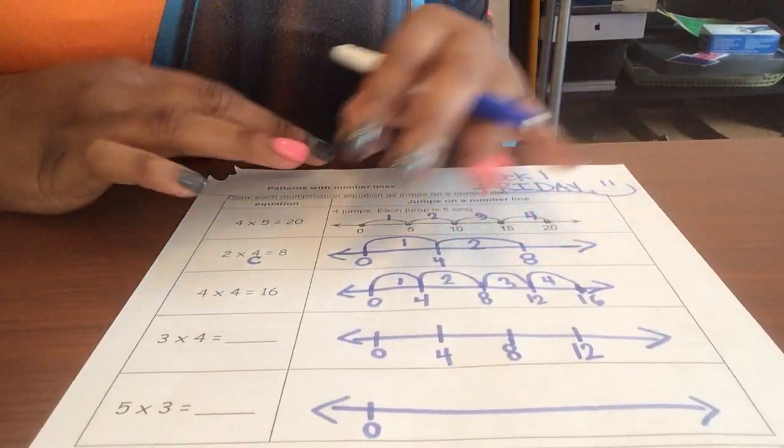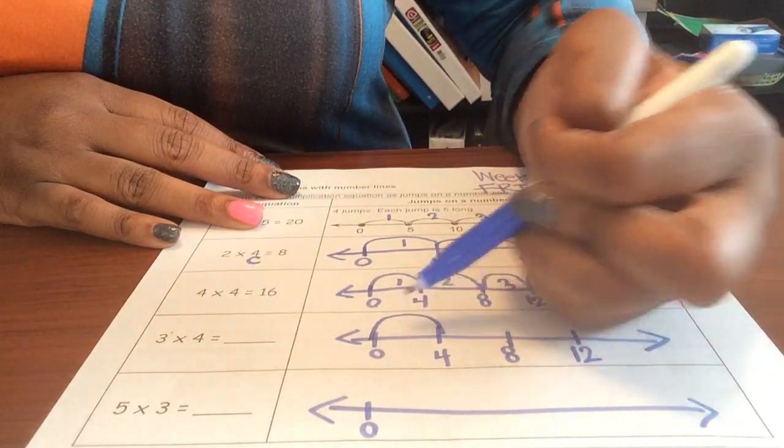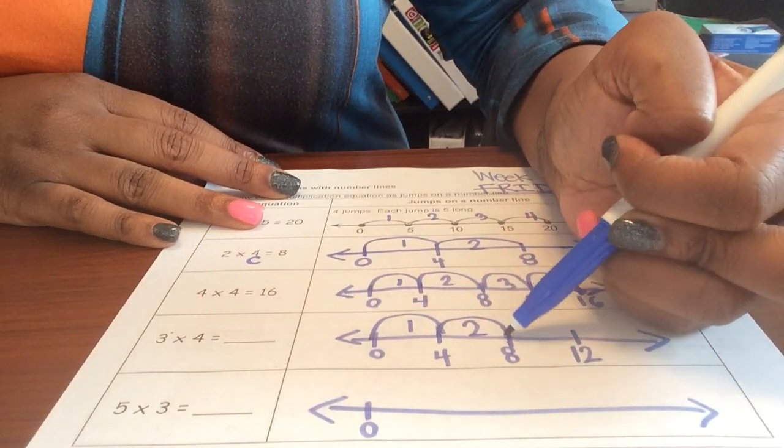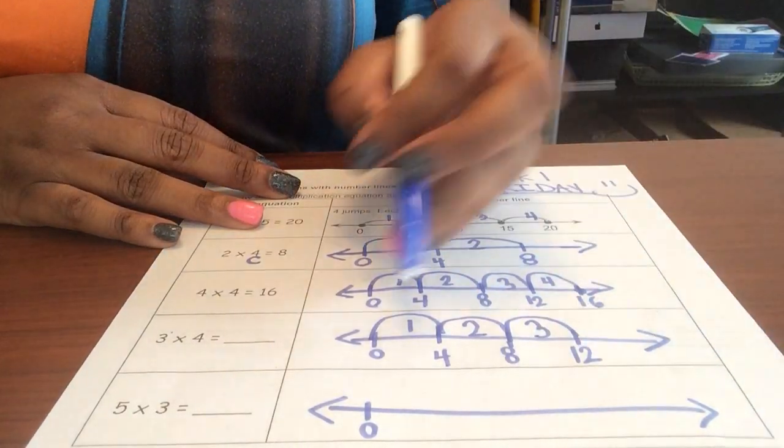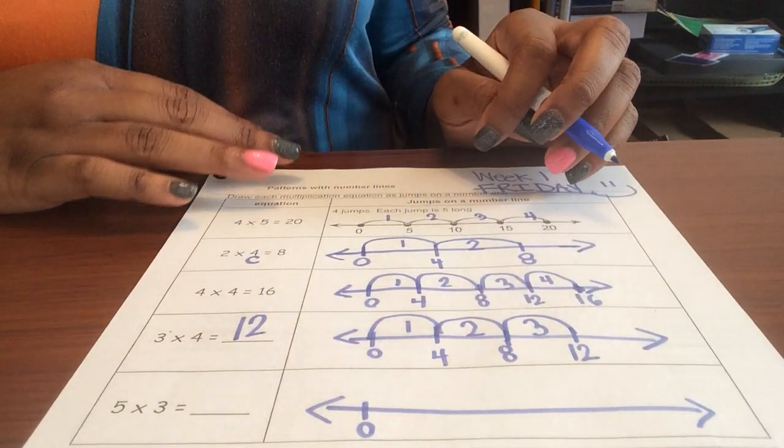Three jumps of four: so zero to four, that's one; eight makes two; this other jump makes three. There's my three jumps and I ended at twelve.